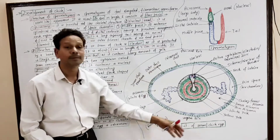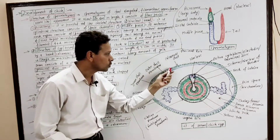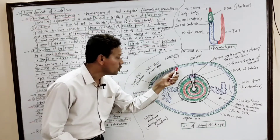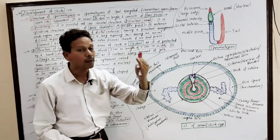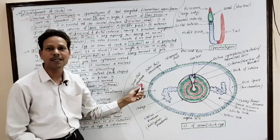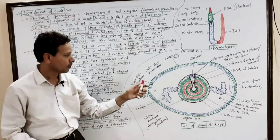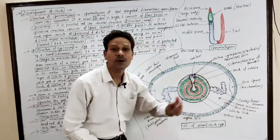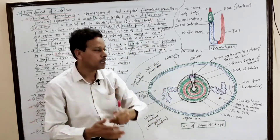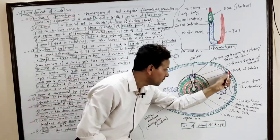The ovum consists of the following envelopes. The outermost coat is the shell, which is calcareous. Next to the shell are two shell membranes — outer and inner. Both shell membranes remain in contact with each other, but near the broader end of the ovum, these membranes separate from each other and enclose an air space or air chamber towards the broader end.